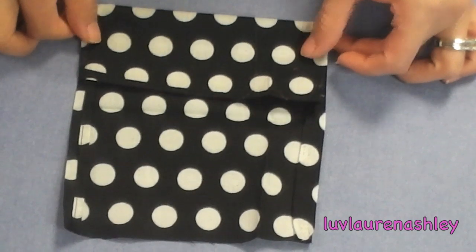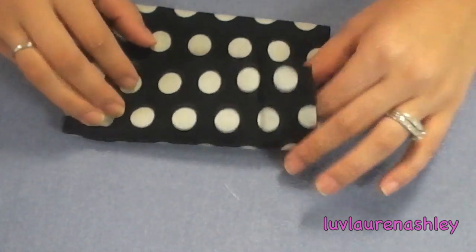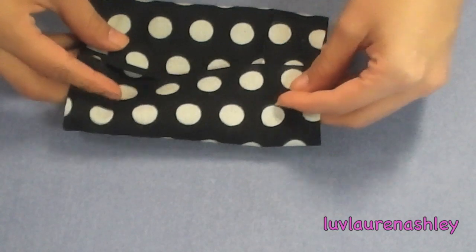Once you glue your sides of your fabric, you want to find the middle of your fabric so that you can glue that down as well.